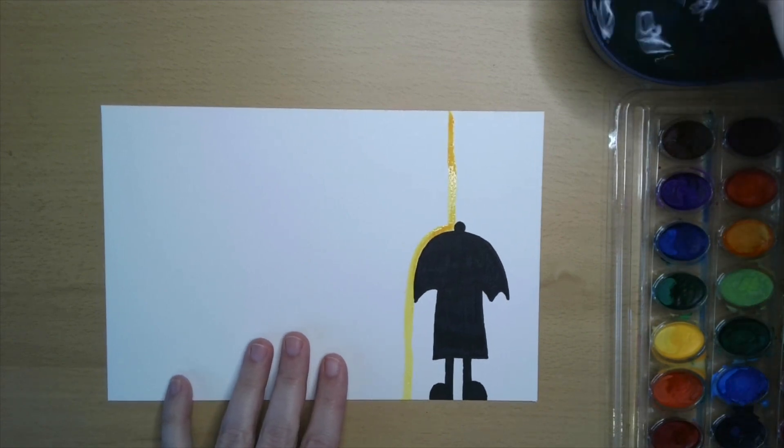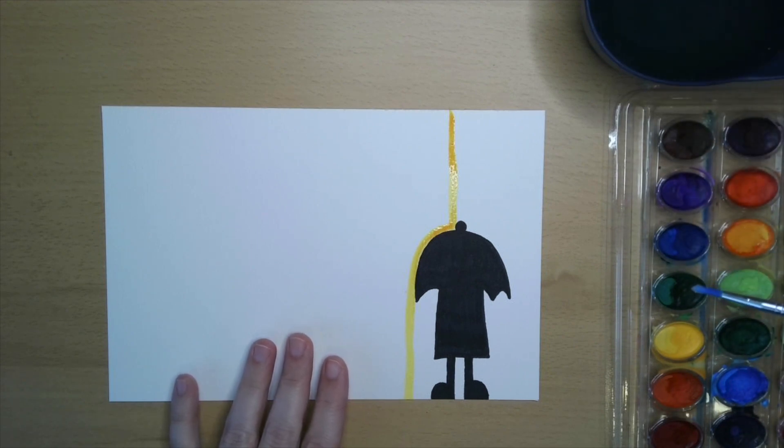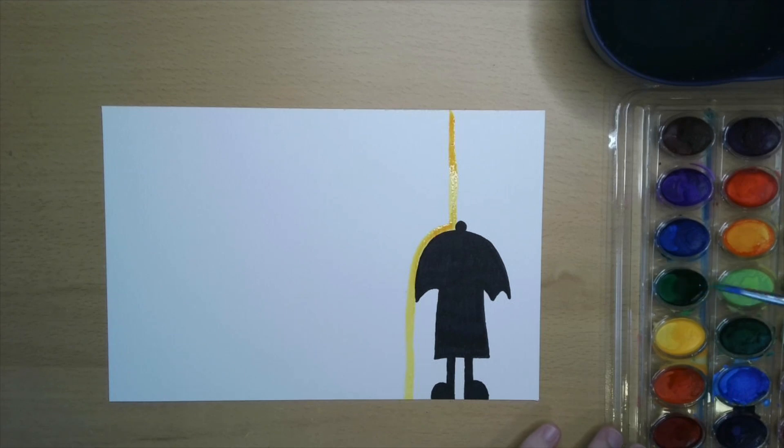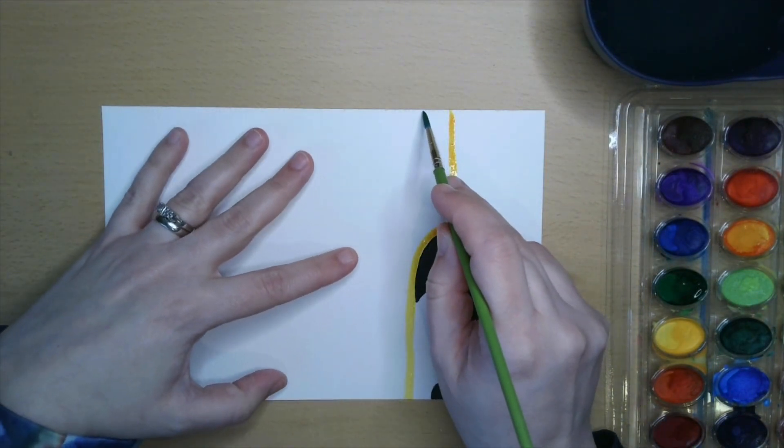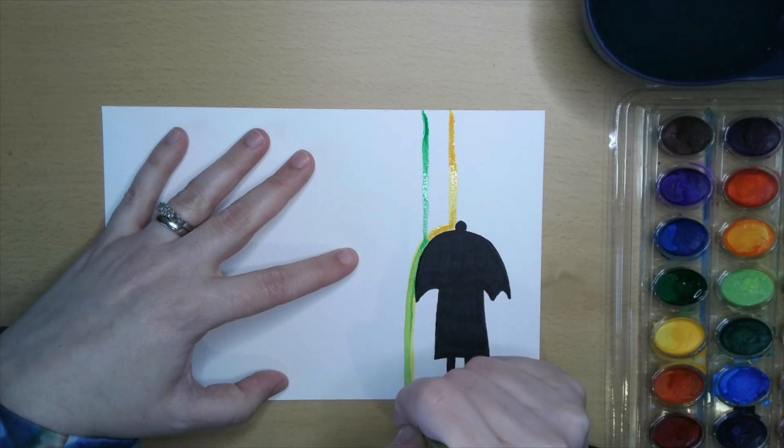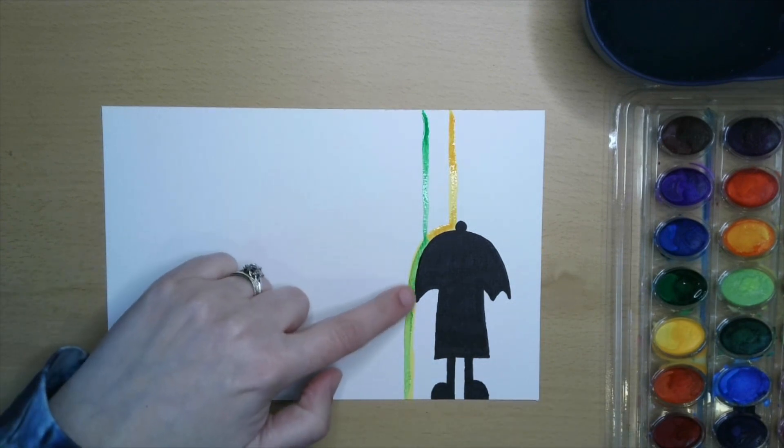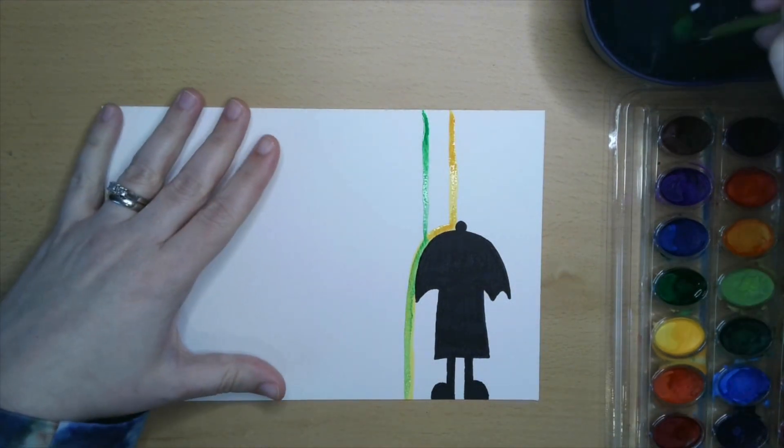Now I'm gonna wash my brush really well and use a different color. Maybe I'll use green this time. Since it's the first time I'm using green today, I need to put three dips of water in the tray to wake up that green color and get it really wet and puddly. Now I'm gonna do a straight line from the sky, but when it hits the umbrella it's gonna slide down all the way to the ground. My green and my yellow kind of mix where they hit the umbrella. That will look really beautiful.